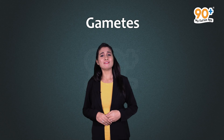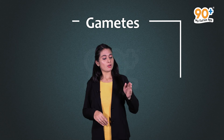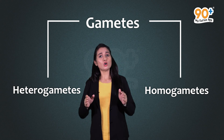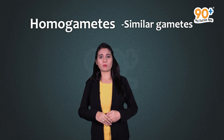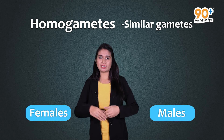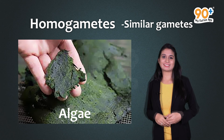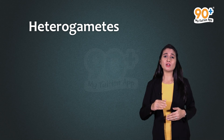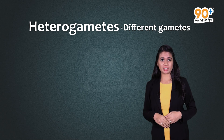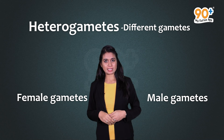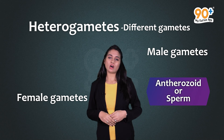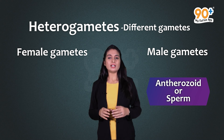Gametogenesis is the formation of gametes, seen in both males and females. Gametes are haploid with half the number of chromosomes. Depending on their appearance, they are divided into homogametes and heterogametes. Homogametes are similar gametes that cannot be differentiated into male and female — for example, in algae. Heterogametes are two morphologically different gametes — male gametes called antherozoids or sperm, and female gametes called egg or ovum.